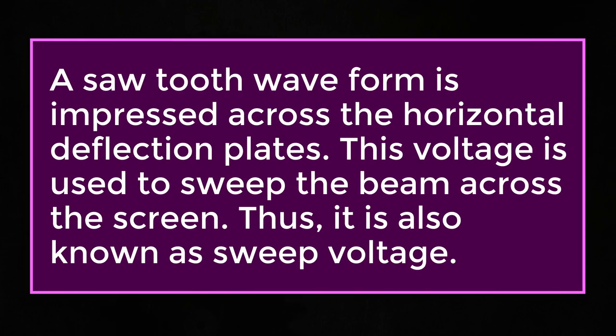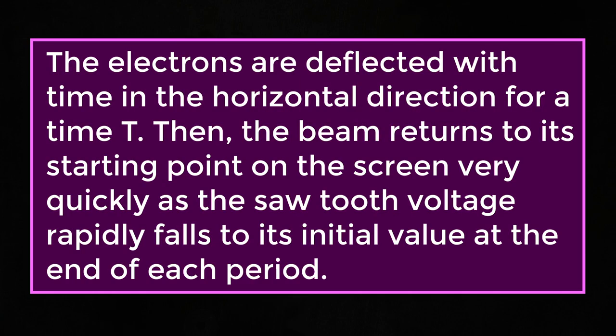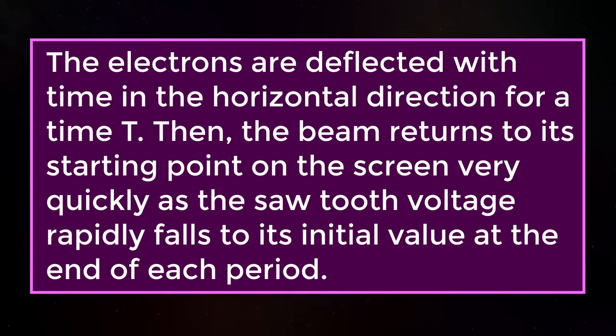A sawtooth waveform is impressed across the horizontal deflection plates. This voltage is used to sweep the beam across the screen. Thus, it is also known as sweep voltage. The electrons are deflected with time in the horizontal direction for a time T, then the beam returns to its starting point on the screen very quickly as the sawtooth voltage rapidly falls to its initial value at the end of each period.